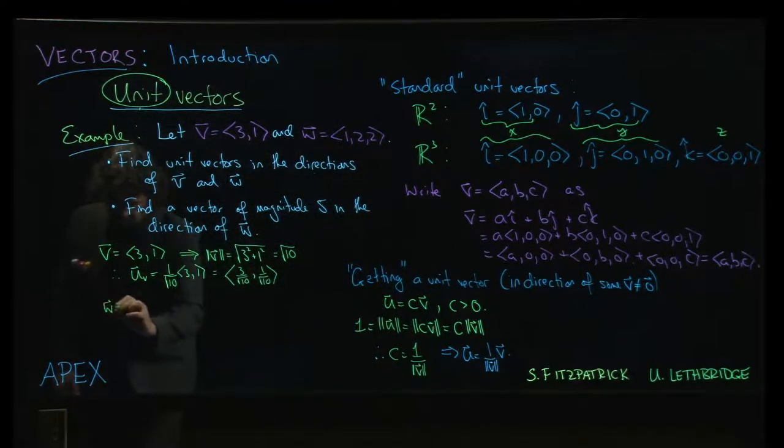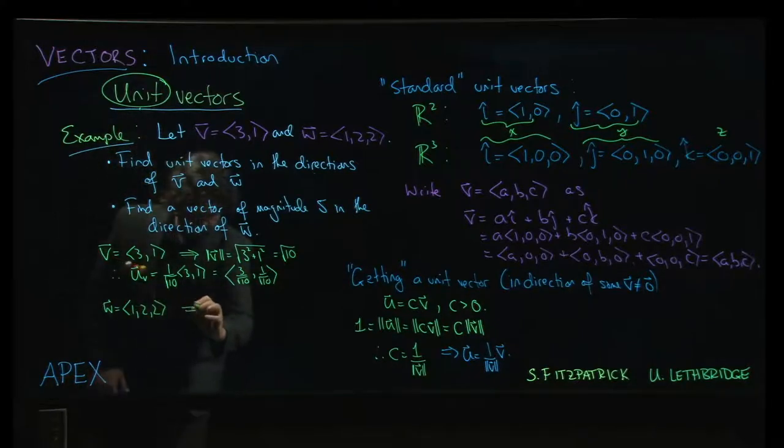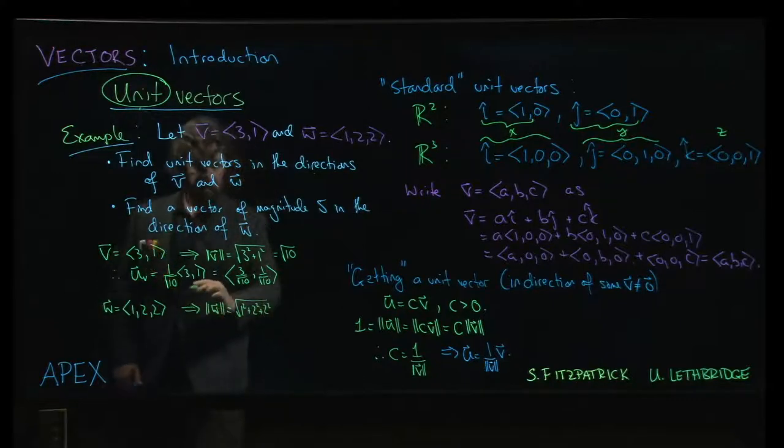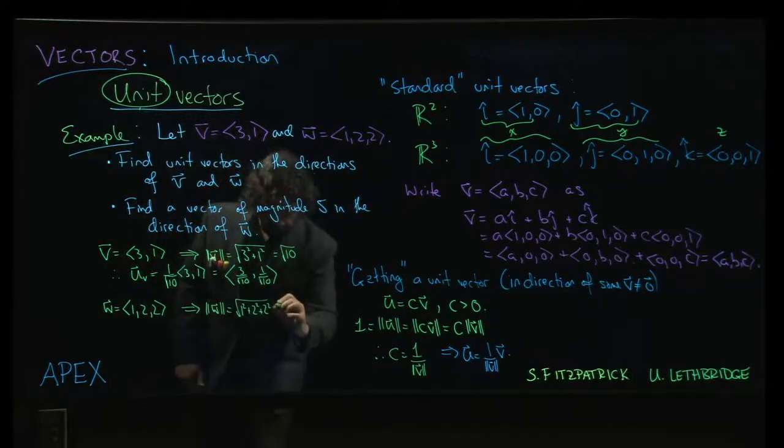Now, w is the vector (1, 2, 2). So the magnitude of w will be the square root of 1 squared plus 2 squared plus 2 squared. So 1 plus 4 plus 4, well that's the square root of 9.